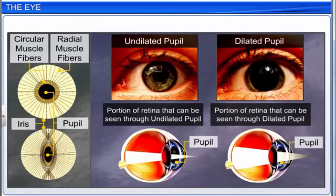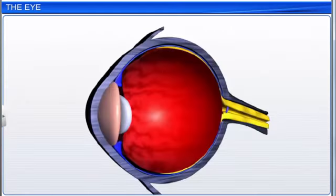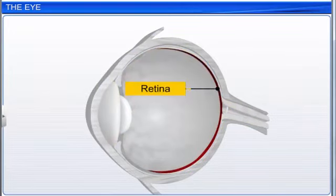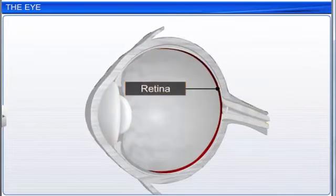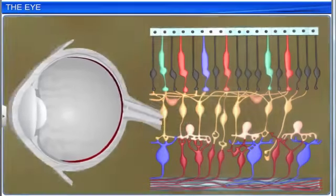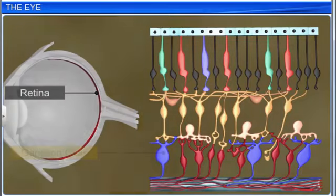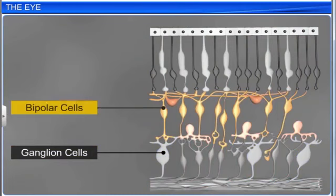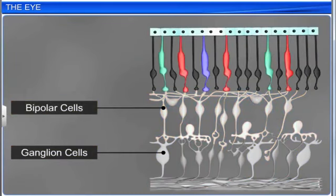The muscle fibers of the iris regulate the diameter of the pupil. The inner layer is the retina, which contains three layers of cells. The innermost layer is called ganglion cells. The middle layer is called bipolar cells, and the outermost layer is called photoreceptor cells.